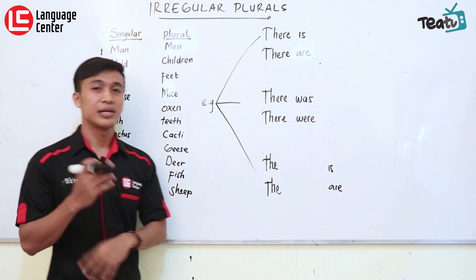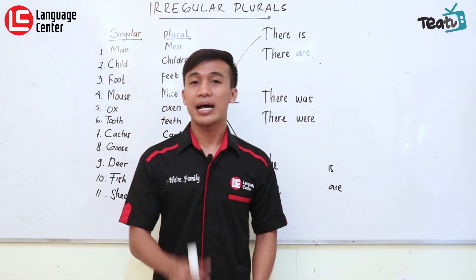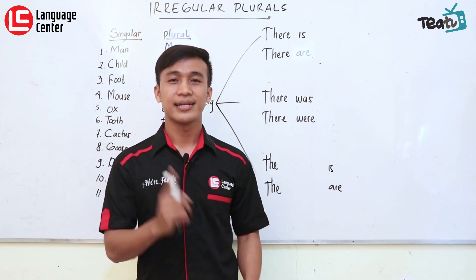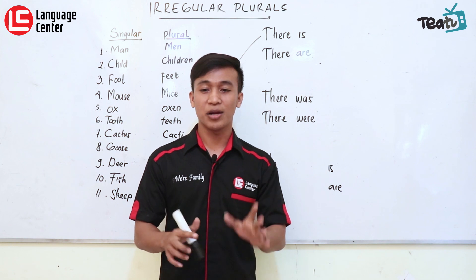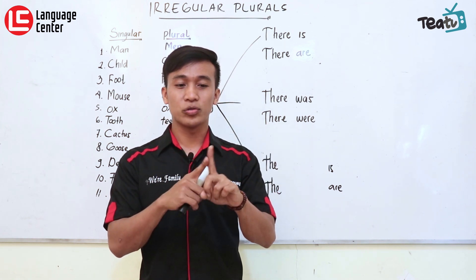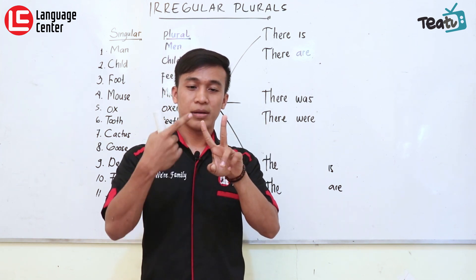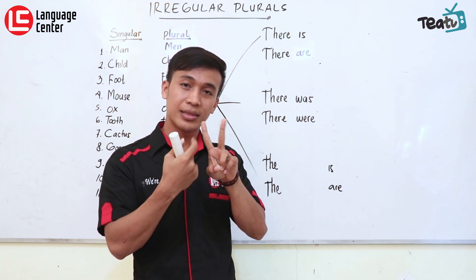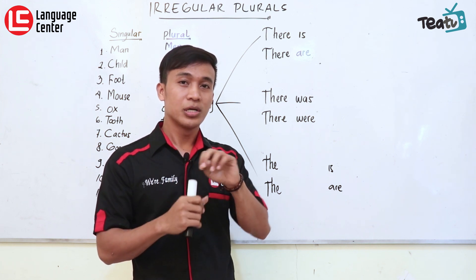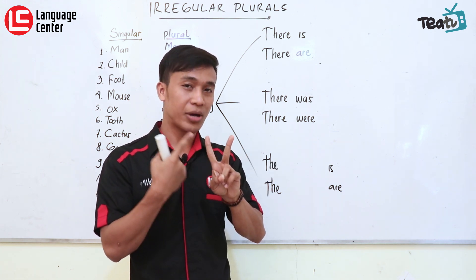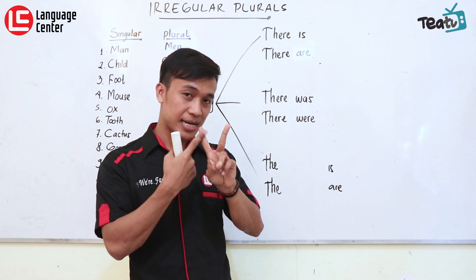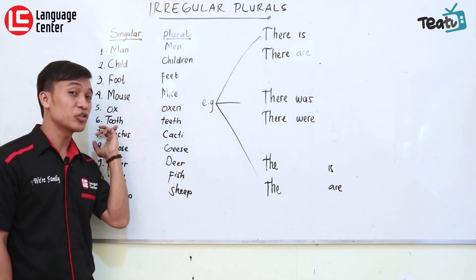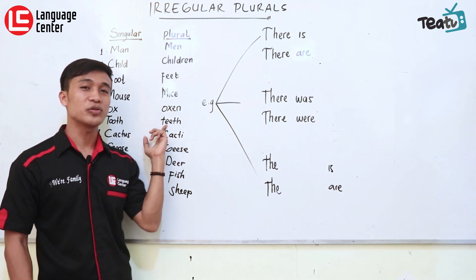Nomor enam adalah 'tooth' — gigi. Kalau giginya satu, 'tooth'. Kalau giginya banyak, namanya 'teeth'. Nah, kalau ada adjektif atau yang menjelaskan sesuatu, itu harus dalam bentuk tunggal. Contohnya, sikat gigi itu 'toothbrush', bukan 'teethbrush'. Harus satu. Sebab contoh lainnya, football bukan 'fitball' — yang menjelaskan harus singular. Jadi, giginya satu: tooth; kalau lebih dari satu: teeth.